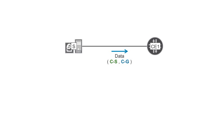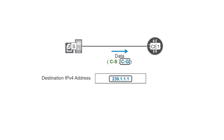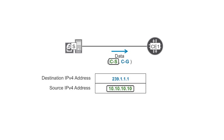Like any other IP packet, a multicast packet has a source and a destination IP address. Its destination IP address is multicast — in other words, it represents a group rather than an individual host. However, the source IP address of a multicast packet is not a multicast one. It is the unicast IP address of the host acting as a source.